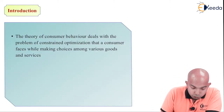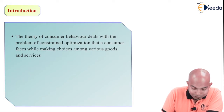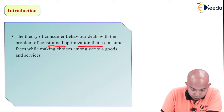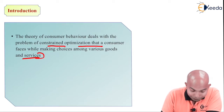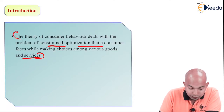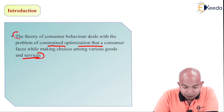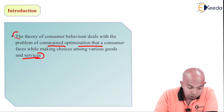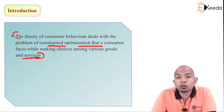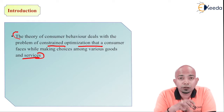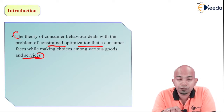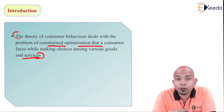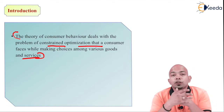The theory of consumer behavior deals with the problems of constrained optimization that a consumer faces while making choices among various goods and services. If you have different options you get a little confused — you have certain restrictions on price or other features.